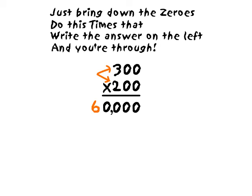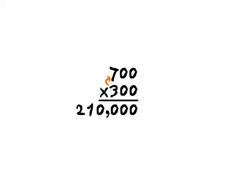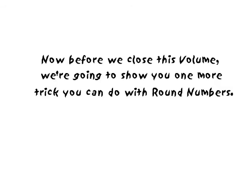So, it turns out that we know quite a lot. As long as numbers have just zeros and one number, we know how to multiply them. Now before we close this volume, we're going to show you one more trick you can do with round numbers.